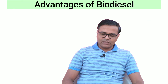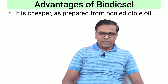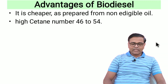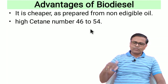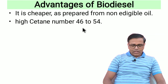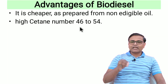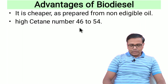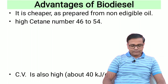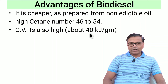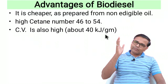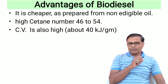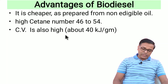Now let us see the advantages of biodiesel. It is very cheap compared to diesel because it is prepared from non-edible oils or waste oils. It has a high cetane number value ranging from 46 to 54 — a high cetane number means high efficiency or high mileage. Its calorific value is also very high, around 40 kilojoules per gram. Compared to power alcohol and petrol, where ethanol had a lower calorific value, biodiesel does not have that problem.